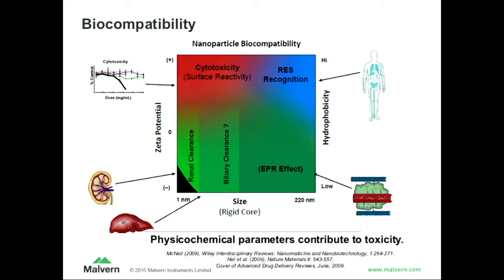Biocompatibility is something you have to keep in mind. On the size scale, very small things get eliminated through the kidneys, and then very large things you can maybe use this EPR effect. But charge is also something I'll allude to later in the talk. Zeta potential tells you what the outside surface charge of your particles is like. In nature most things are negative, and when you have positive things they tend to stick to other cells or have sometimes undesired effects — maybe cytotoxicity, or how they get recognized by the RES.